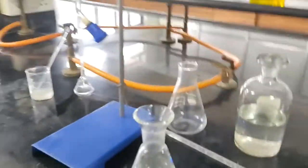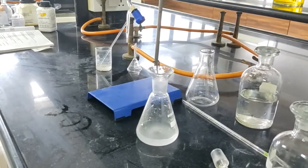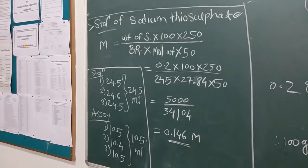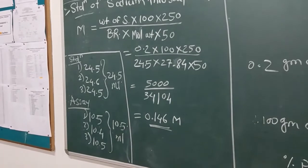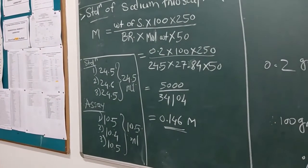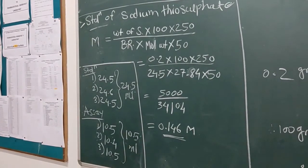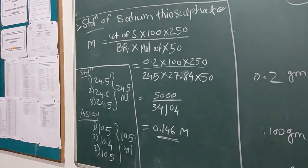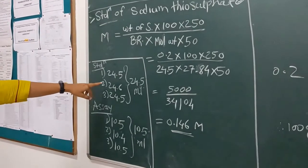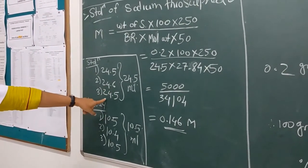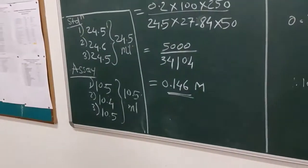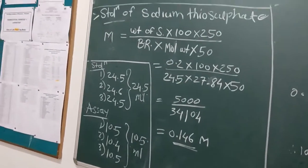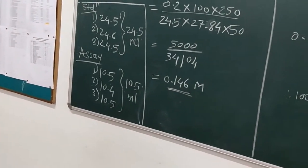Repeat the assay procedure 3 times, calculate the mean, and calculate the percent purity. For the calculation of standardization of 0.1 molar sodium thiosulfate: molarity = (weight of sample × 100 × 250) / (burette reading × molecular weight × 50), where 250 is the total volume and 50 ml is the pipetted volume. Putting in the values: 0.2 × 100 × 250 / (24.5 × molecular weight × 50). The average burette readings are 24.5, 24.6, 24.5, giving an average of 24.5. The molarity of sodium thiosulfate is found to be 0.146 molar.